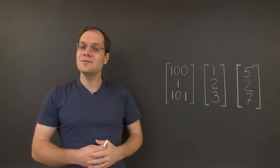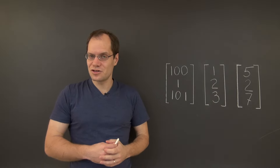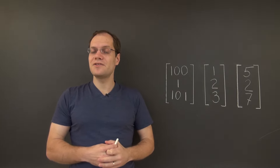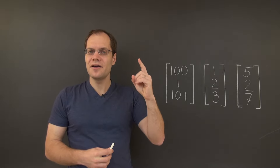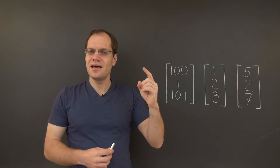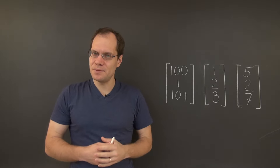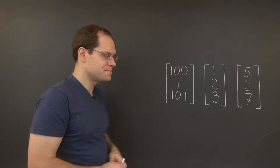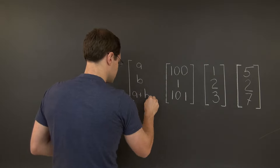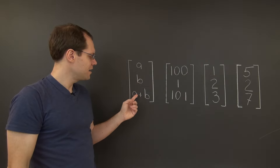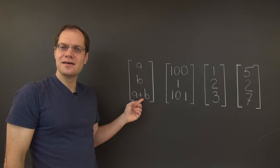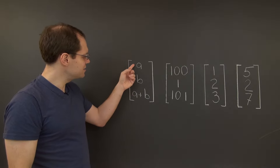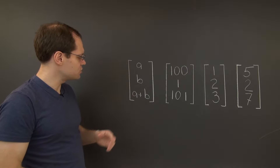This seems to lead to the conclusion that the span of these vectors is {A, B, A+B} — where the last entry is the sum of the first two. And this is actually the correct conclusion, but it's the correct conclusion based on an incomplete argument.